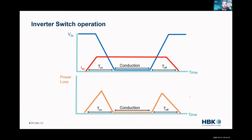Before we go too deep into this topic, we need to understand a little about inverter switch operation. When the switch is off, if we're measuring across the switch — a probe on the input and output side — we'll measure a high voltage and no current. When we give the command to turn the switch on, we're going to see a little current rise and then the voltage start to fall, because we're creating a short, and then our voltage difference goes to zero.